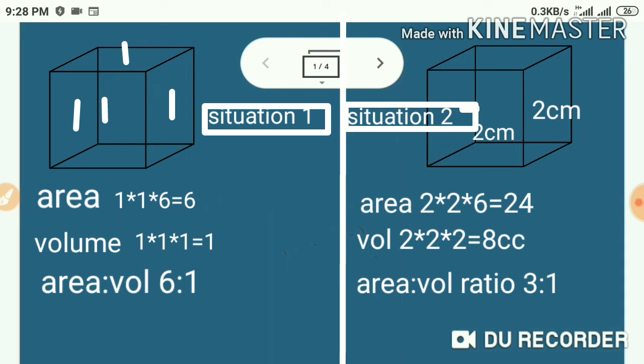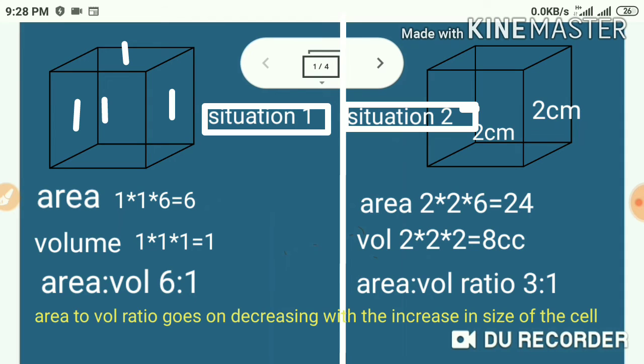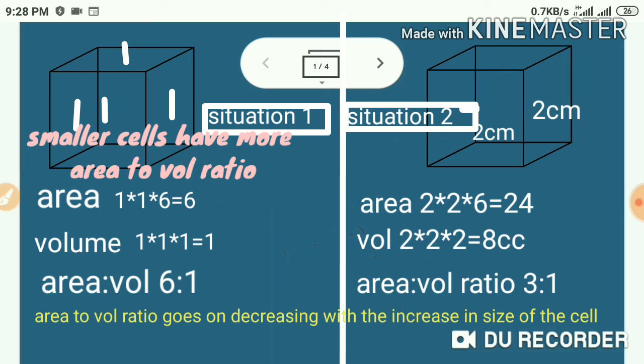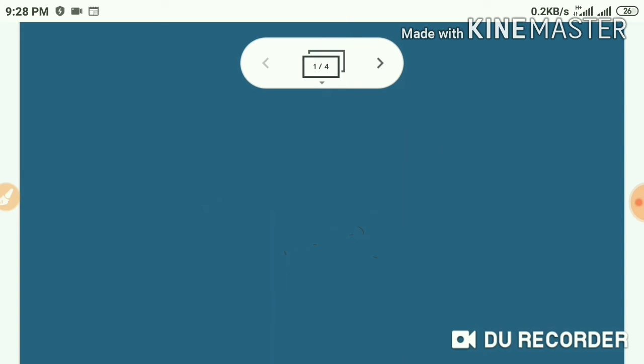Just compare the situation 1 and 2. In the first situation, the ratio is 6 is to 1. In the second situation, the ratio is 3 is to 1. That is, area to volume ratio of the cell goes on decreasing as the size of the cell increases. Smaller cells have more area to volume ratio. Then, what would be the benefit of the cell size being small?